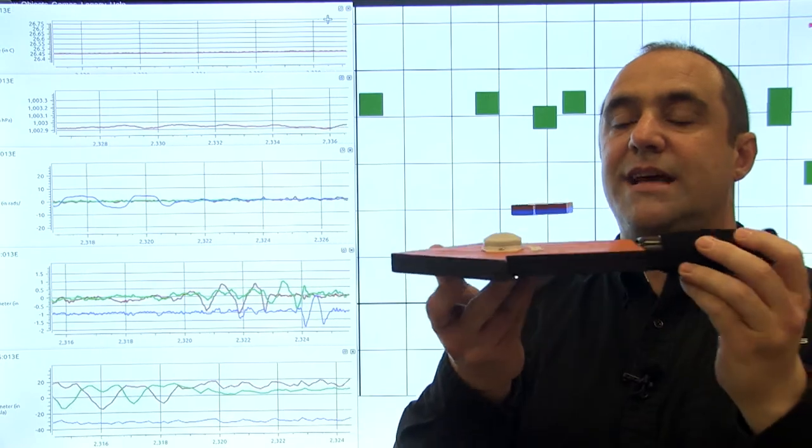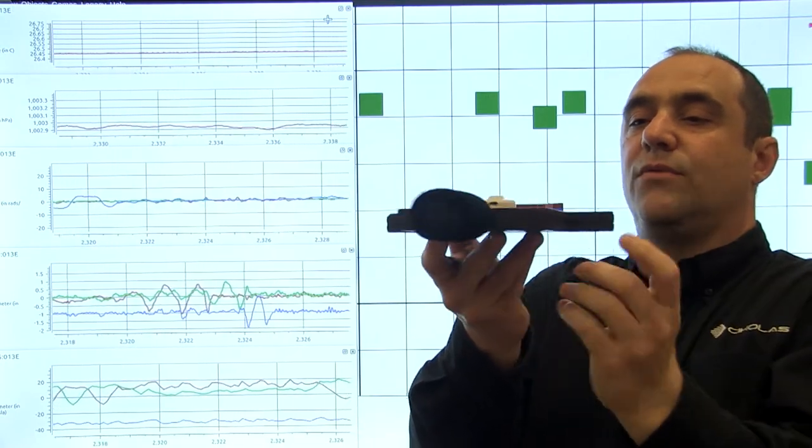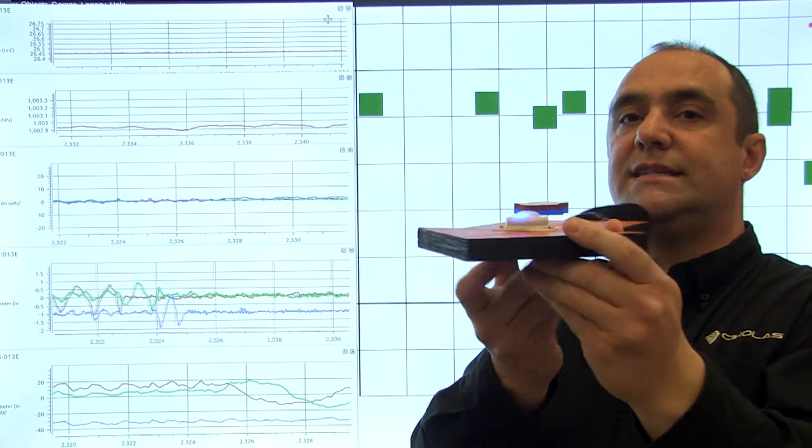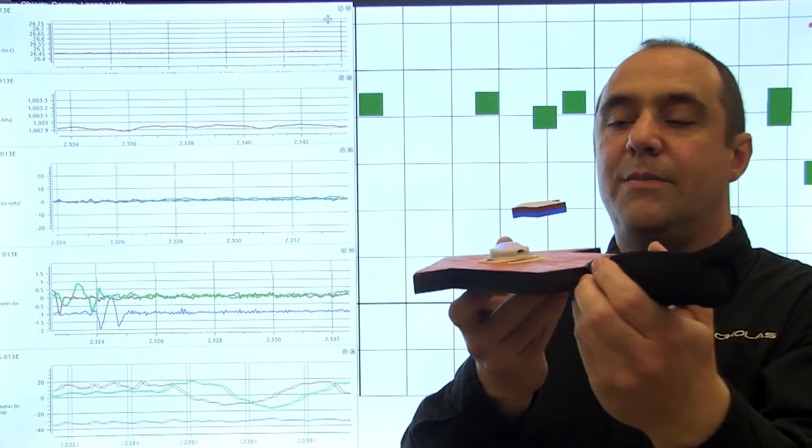You'll see the magnetometer change, and if I roll it through the Earth's magnetic field, you should see a nice sine wave on the magnetometer data.